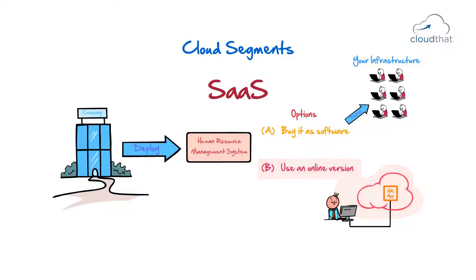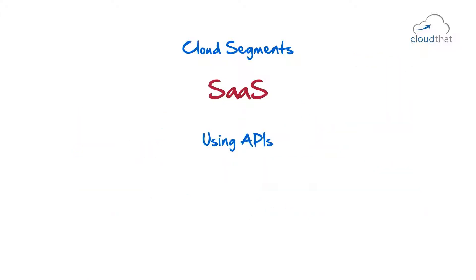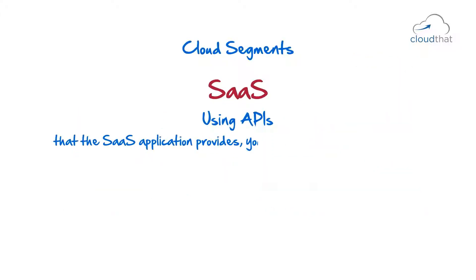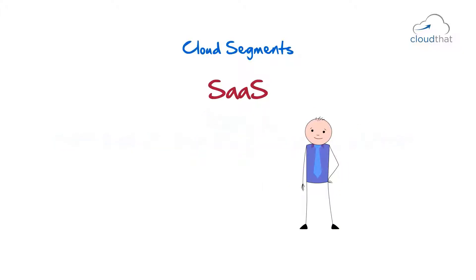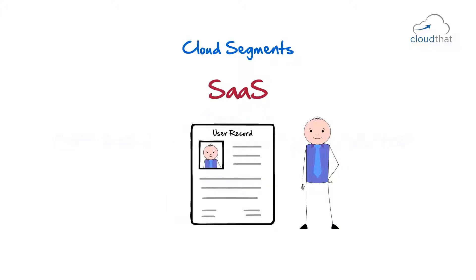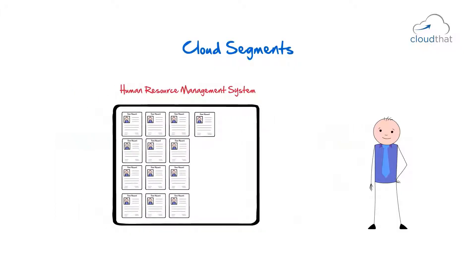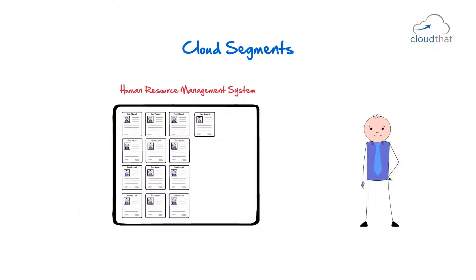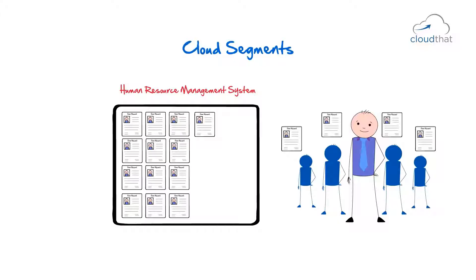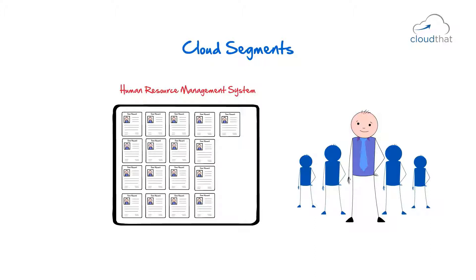In the second case, you are using a SaaS — Software as a Service. Using APIs that this SaaS application provides, you can configure the application so that whenever a new employee joins and a user record is created for him in the company's Active Directory, a corresponding user record gets created in the human resources management system. Moreover, as the number of employees in your organization grows, you don't have to worry about scalability, as it is built in to the SaaS layer.